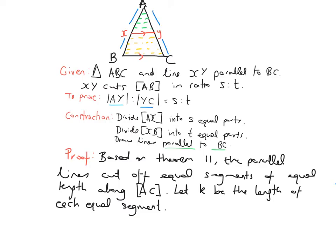So for our proof, based on Theorem 11, which is the one we would have done in our previous video, the parallel lines cut off equal segments of equal length along AC. Based on what we proved in Theorem 11, we can state that the parallel lines cut off equal segments of equal length along the line AC.